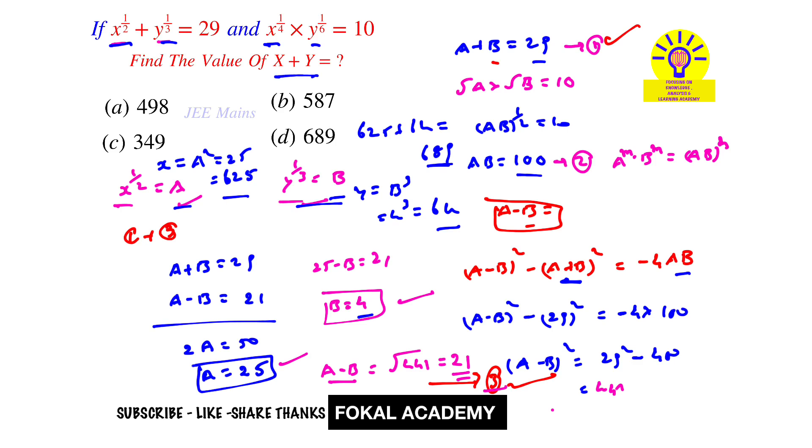So x plus y value is 689. From the options, option d is the correct option.